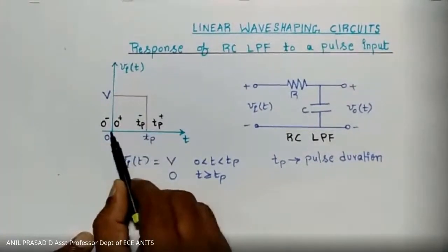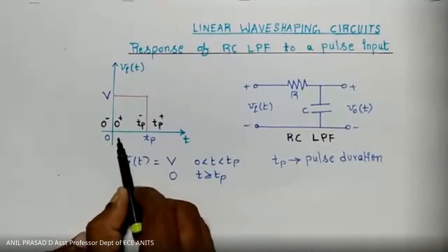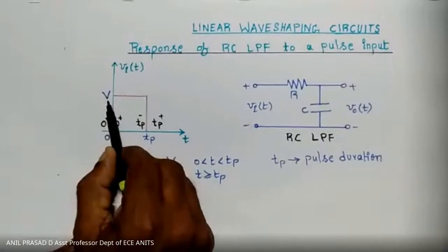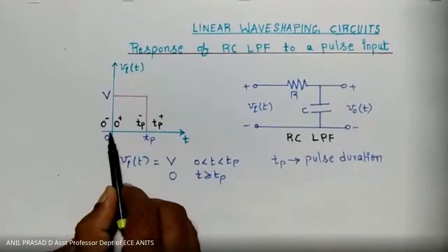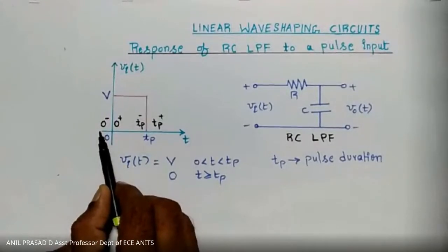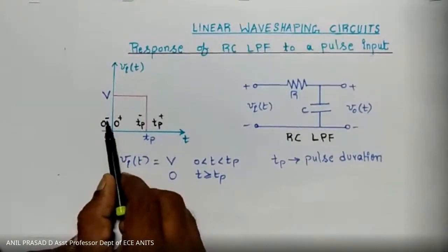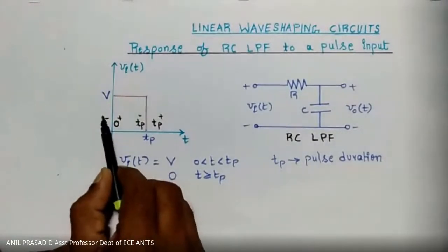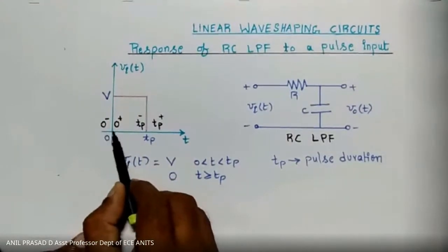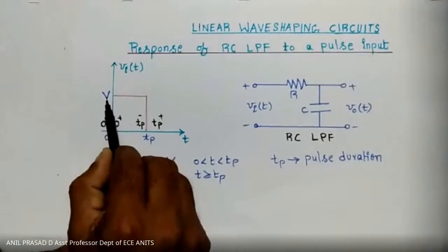Just before 0, the input is 0. Just after 0, the input is capital V — that is what you need to understand. 0 minus means just before 0 where my input signal is 0, and 0 plus means just after 0 where my input has suddenly changed from 0 volts to plus V volts.